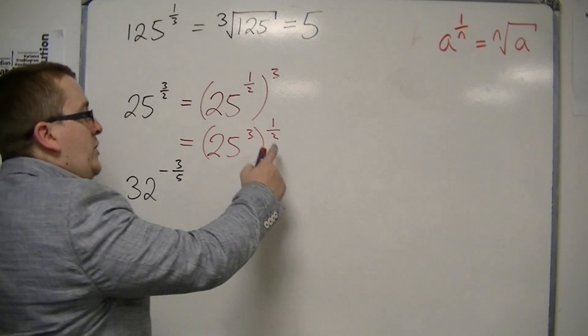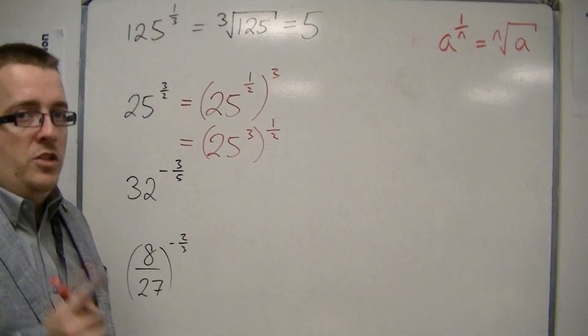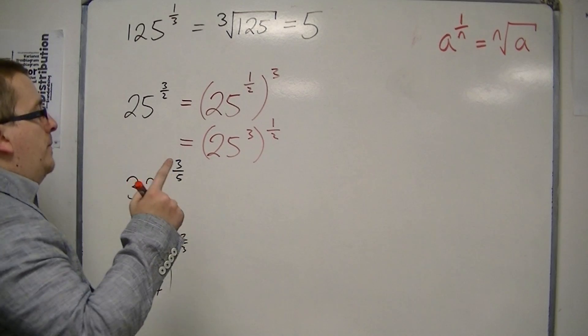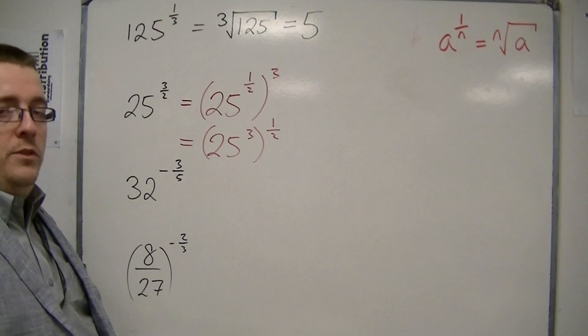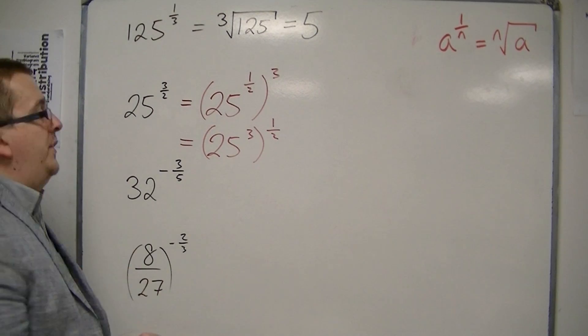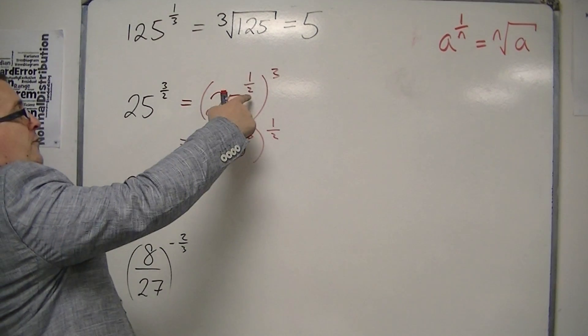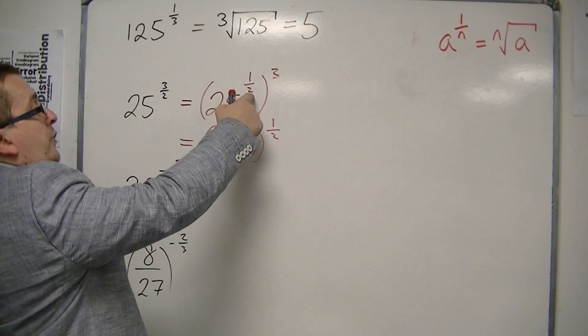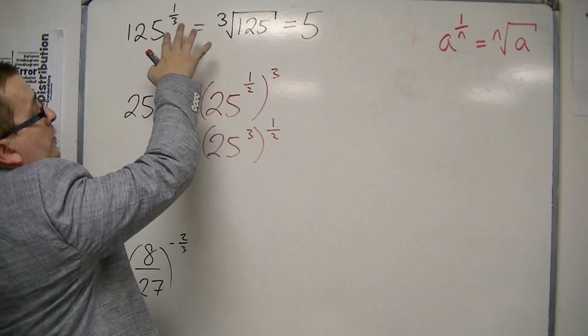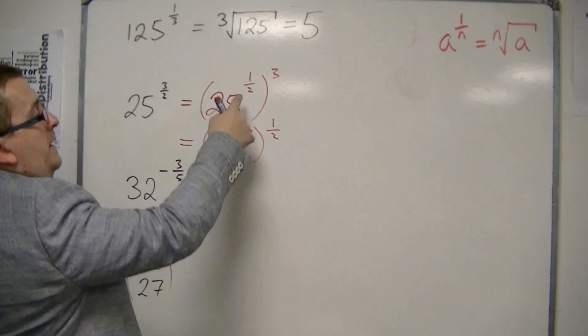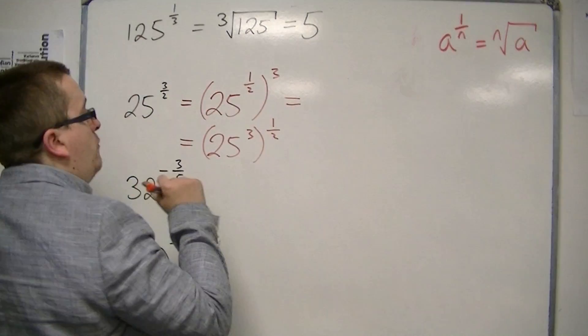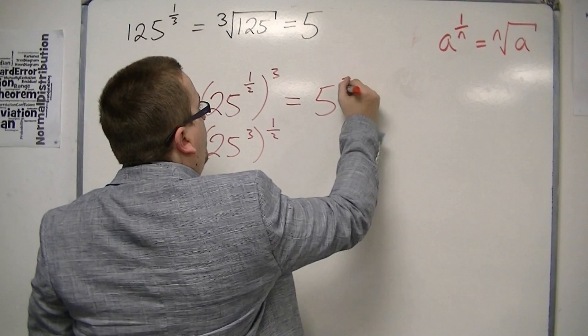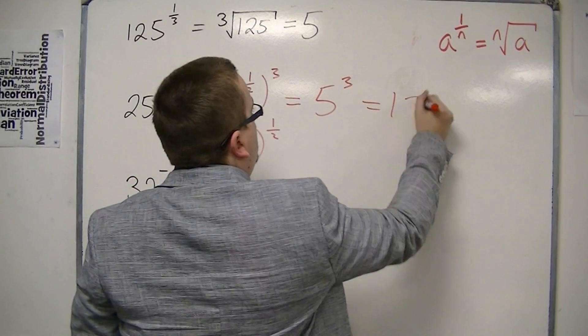Which of these is going to be easier to work with? I don't particularly want to find out what 25 cubed is; I can't do that easily in my head. But I do know what 25 to the half is, because that's the square root of 25. We saw that the third was a cube root, so a half is a square root. The square root of 25 is 5, so that's 5 cubed, which is 125.